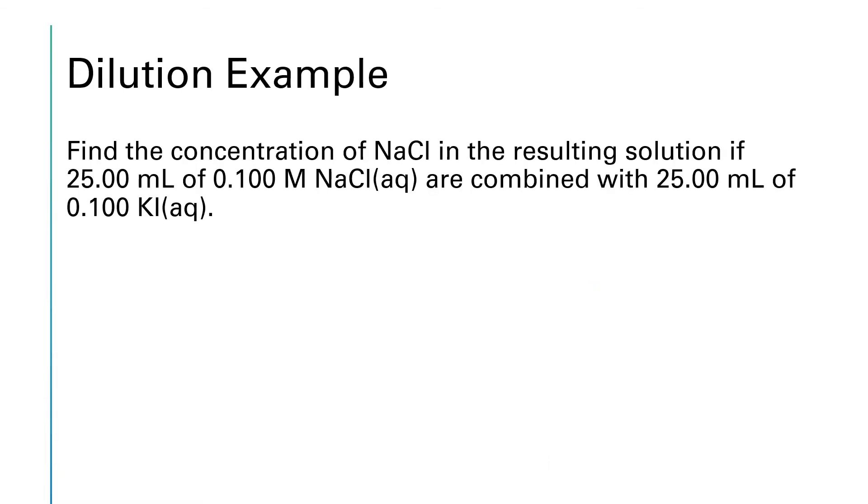As an example let's try this problem. It says find the concentration of NaCl in the resulting solution if 25 mls of 0.1 molar sodium chloride are combined with 25 mls of 0.1 molar potassium iodide. Okay so we've got 25 mls of two separate solutions that get mixed together. We are going to assume in this process that after we mix these two solutions our v2 will be equal to 25 plus 25 or 50 milliliters and keep in mind those still have two more sig figs attached to them for four sig figs total.